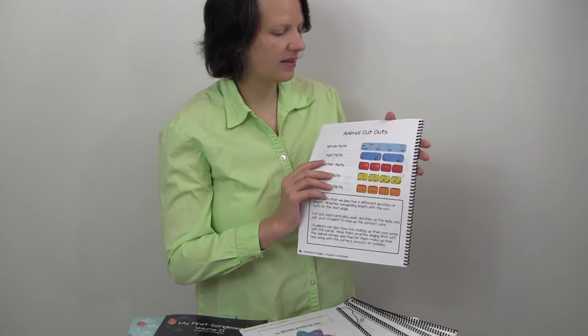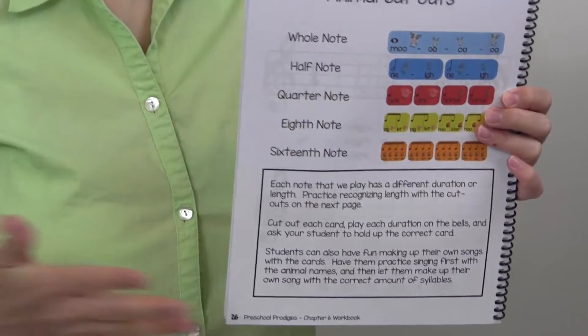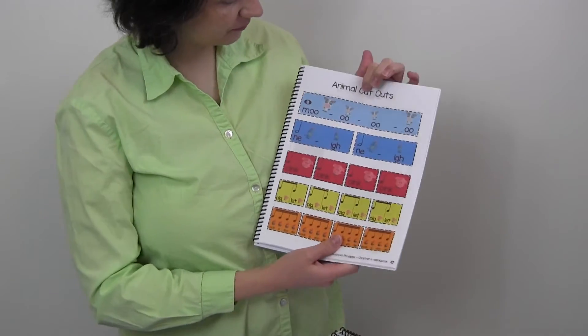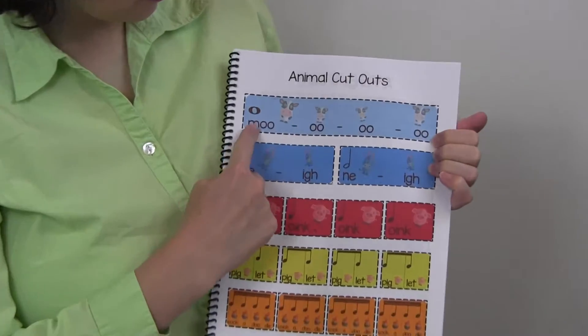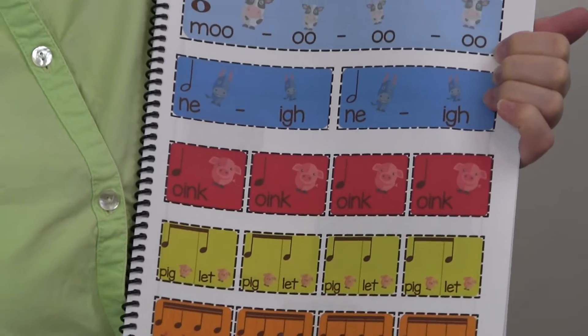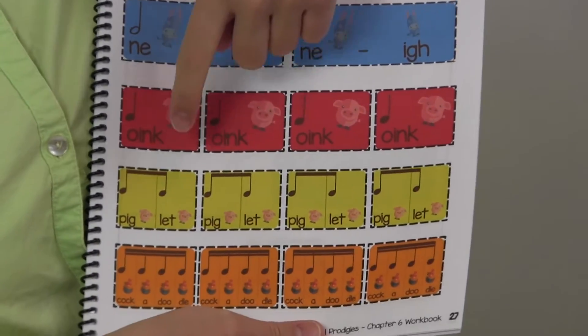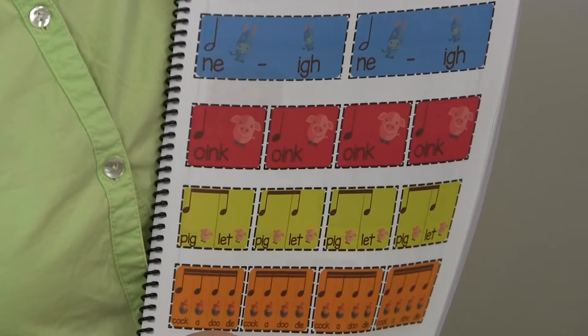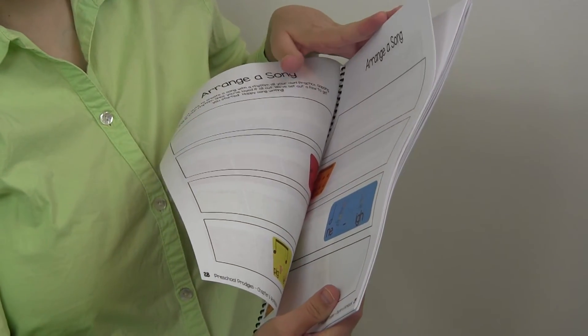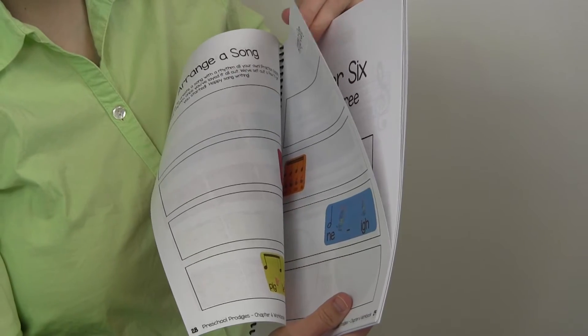This one is in level six just to show kind of the scope and sequence. By the time we get here, we've got animal cutouts, you know, a whole note is twice as long as a half note. And then we've learned the whole note, the half note, the quarter note, the eighth note, the sixteenth notes. And then we're learning fractions, it's on this page right here, just a second, I'll show you.